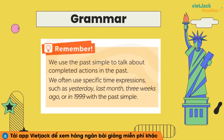We use the past simple to talk about completed actions in the past. Các bạn nhớ cho cô nhé — mình sẽ dùng thì quá khứ đơn để nói về completed actions in the past, có nghĩa là một hành động đã hoàn thành ở trong quá khứ. Thì quá khứ đơn dùng để nói về những hành động đã được hoàn thành ở trong quá khứ.